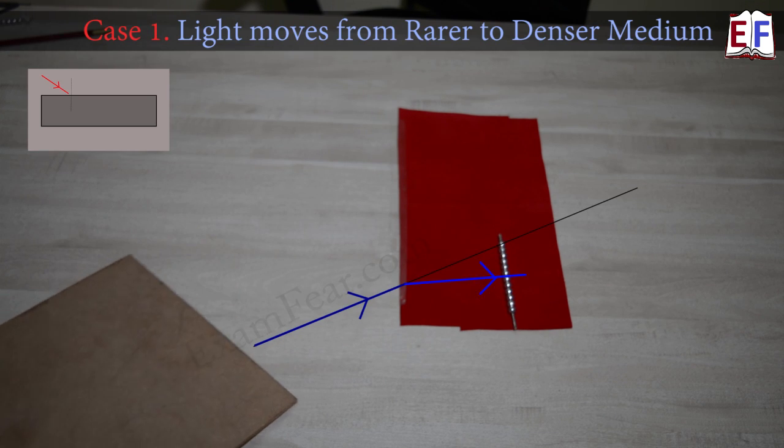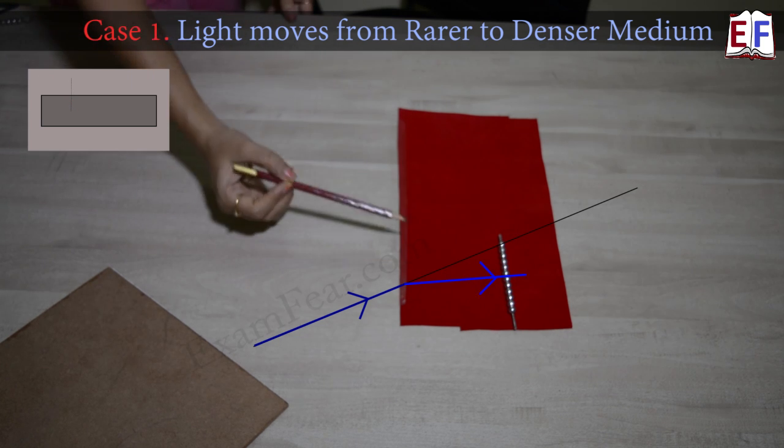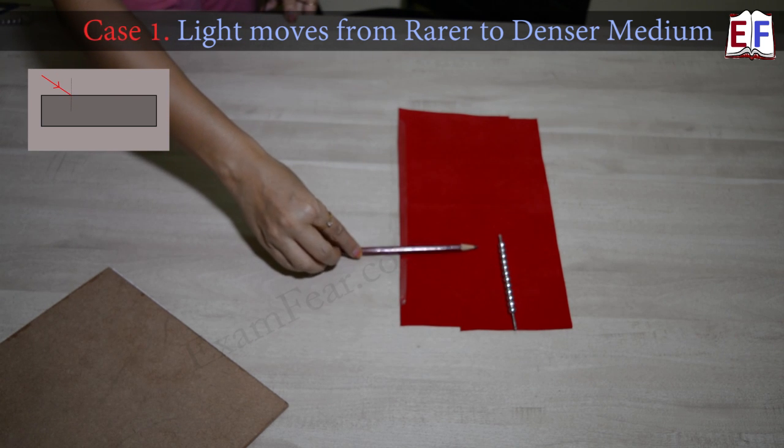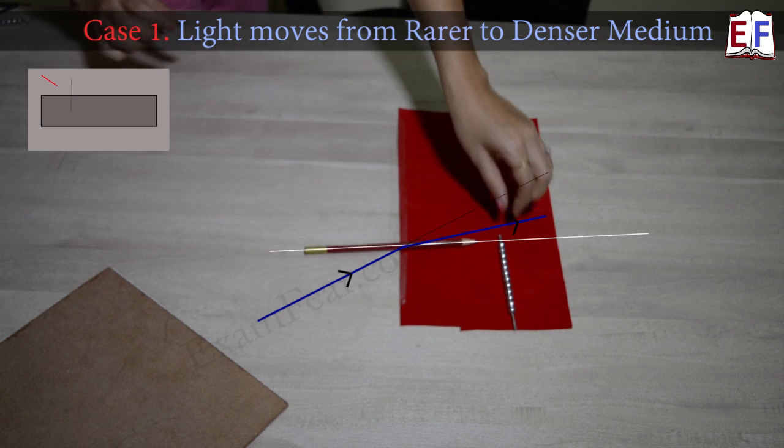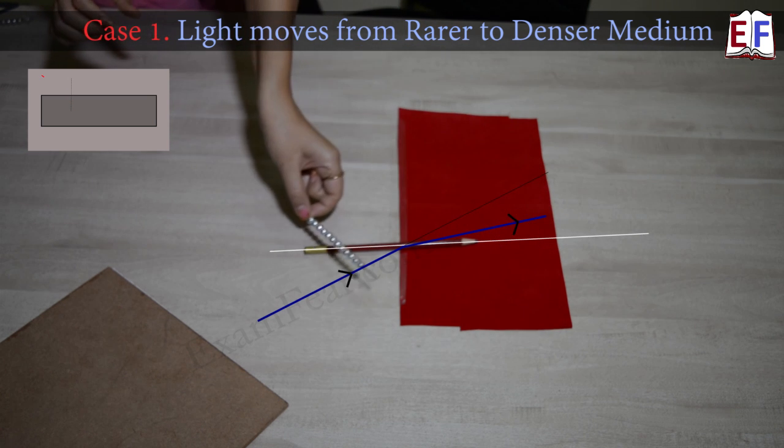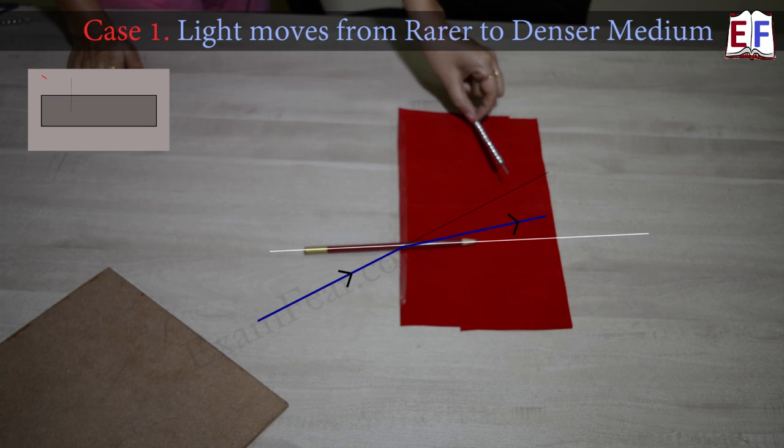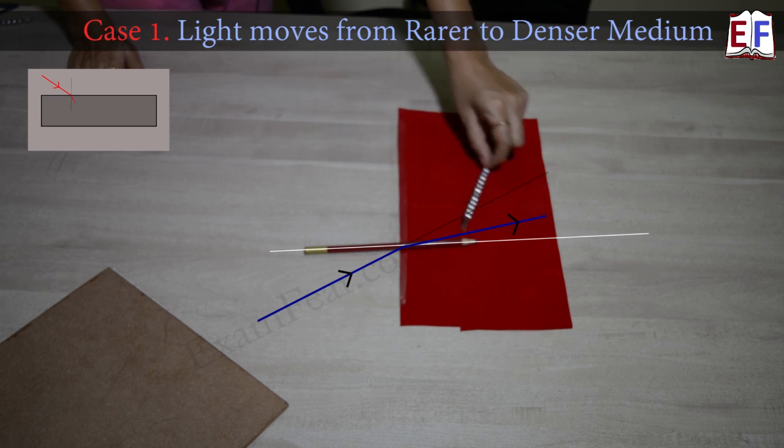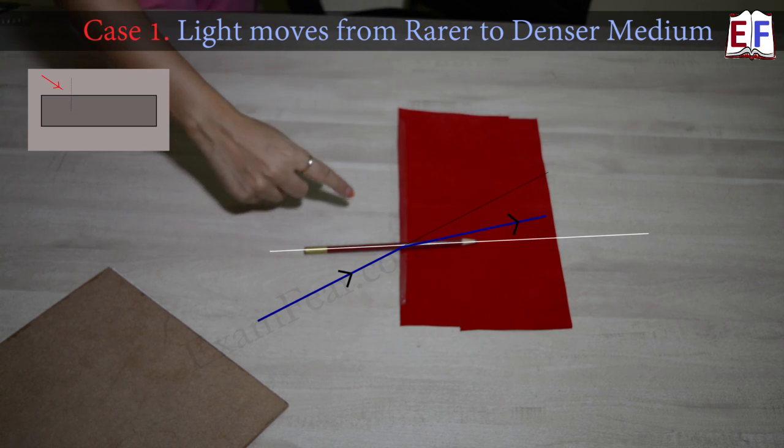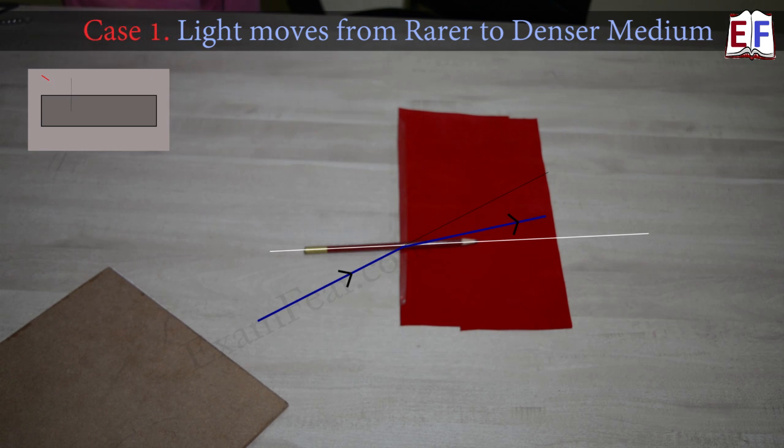When it moves from a rarer medium to denser medium, we see that if this is the normal, in the ideal case, this bead would have moved like this, which is not happening here because of change in medium. It is bending towards this side, so it is actually going somewhere here. So that means it is bending towards the normal, which was the scenario when it moves from optically rarer to optically denser.